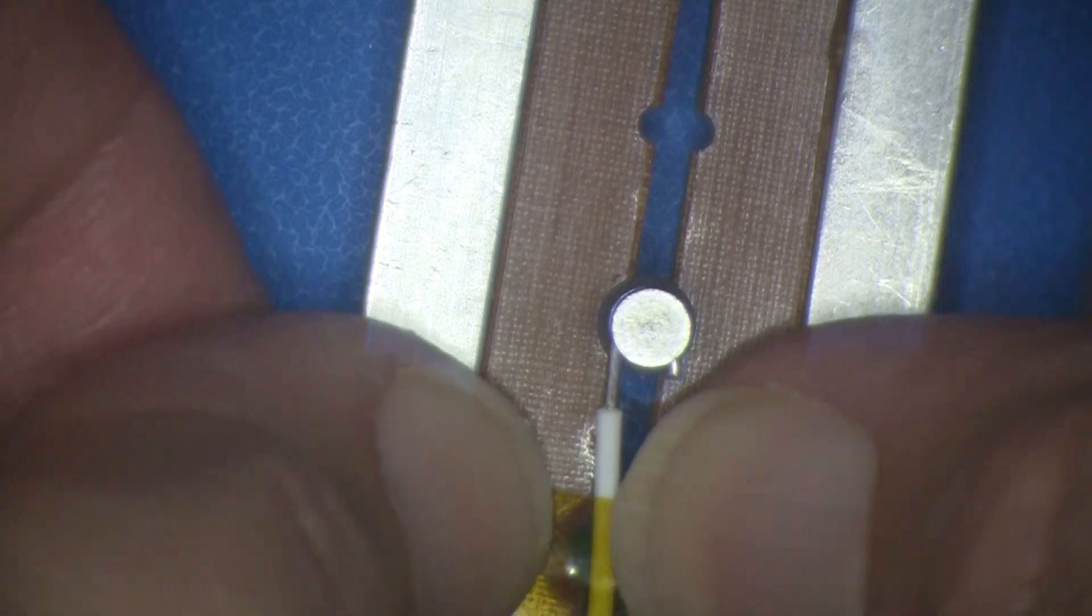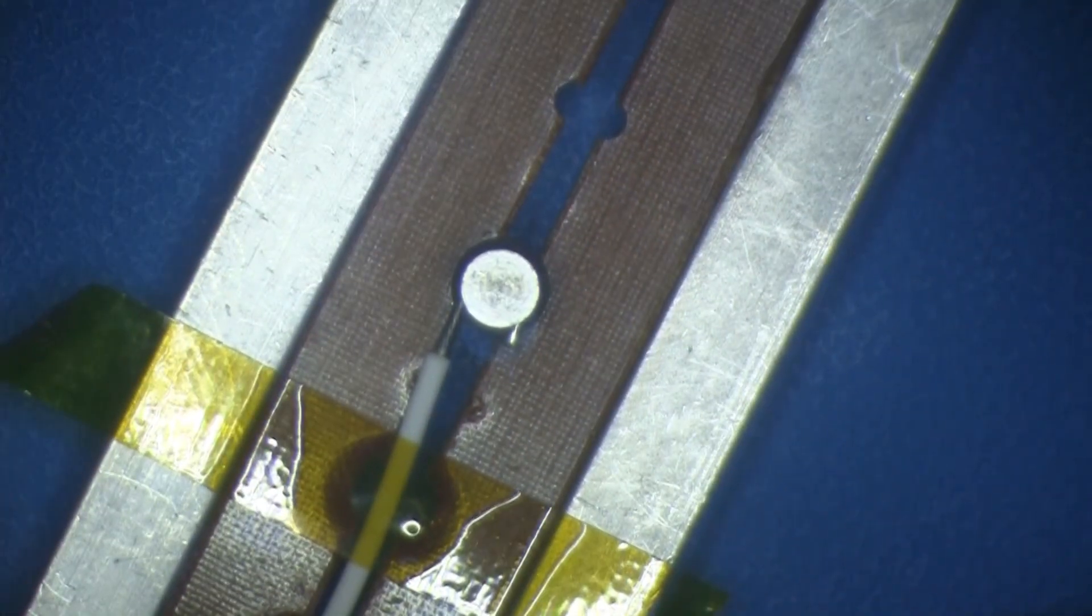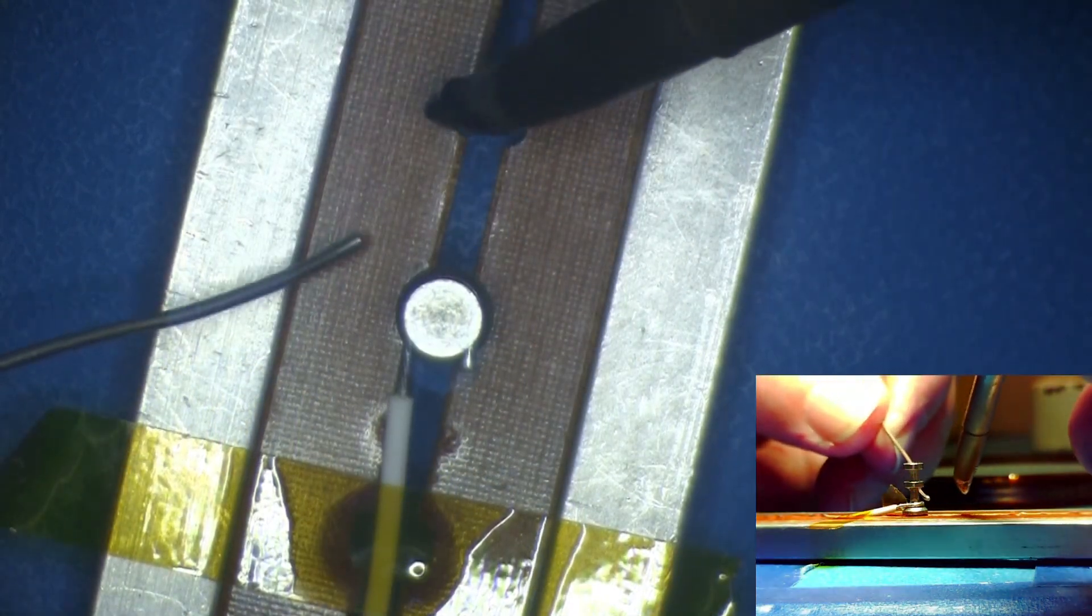For this demonstration, the instructor is using polyamide tape to hold the wire in place during soldering. Use a large thermal mass soldering iron tip. The tip selection should be able to quickly heat the wire and the terminal.